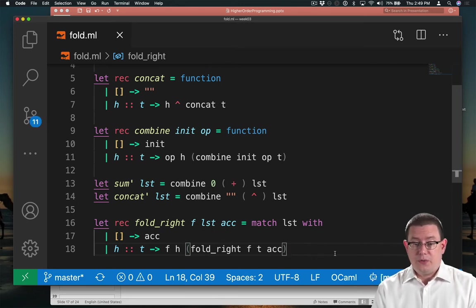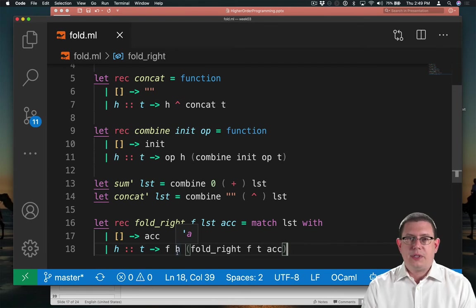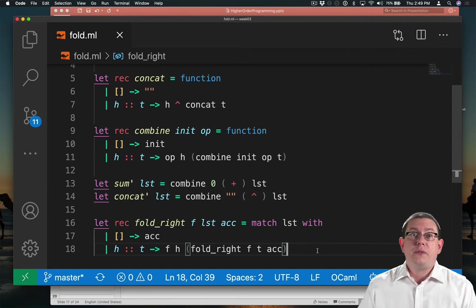So that's the implementation of fold right. Do you see why this is folding in from the right? We don't fold in the left element of the list here, the head, until we're done with the result of the recursive call on all of the elements to the right. So that's what ends up making this fold.